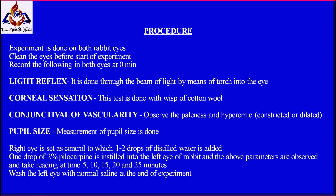The right eye is set as the control, receiving one to two drops of distilled water. One drop of two percent pilocarpine is instilled into the left eye of the rabbit, and the above parameters are observed. Readings are taken at 5, 10, 15, 20, and 25 minutes. At the end of the experiment, make a graph plotting time in minutes versus pupil size in millimeters.